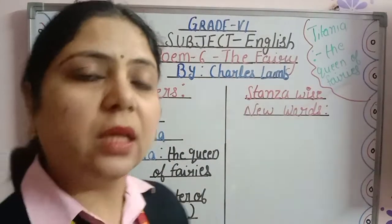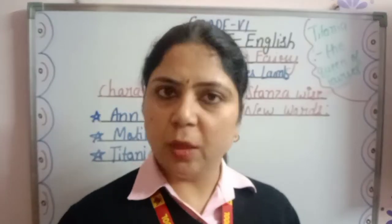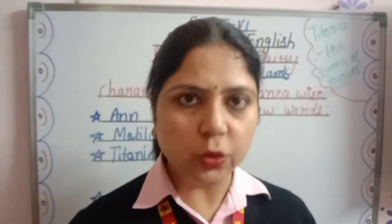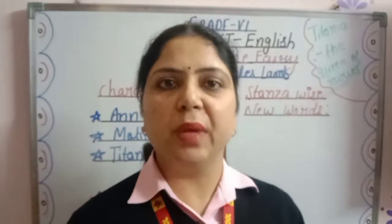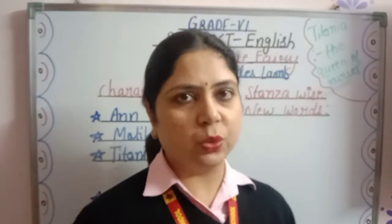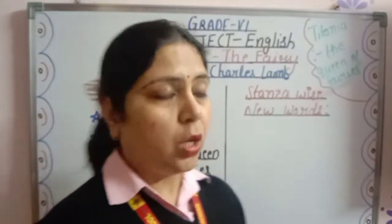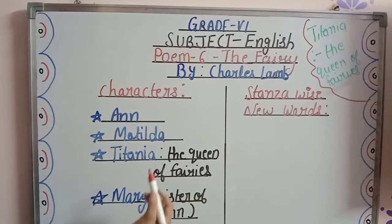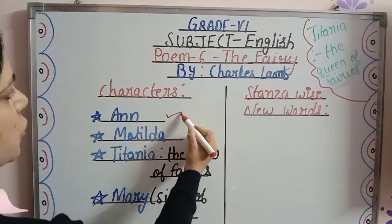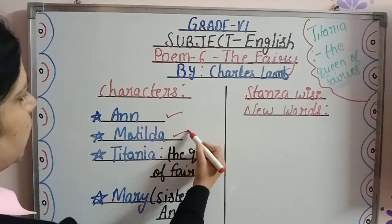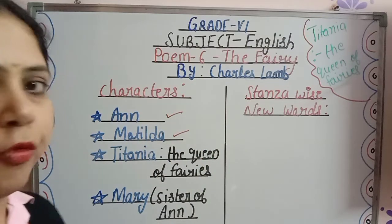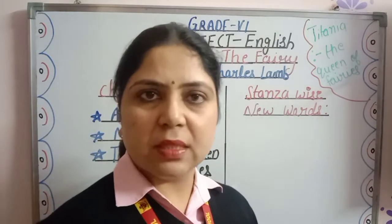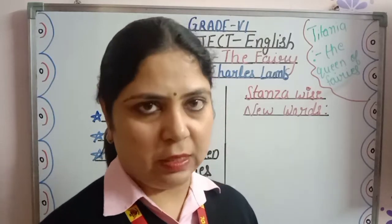In this poem, we are going to study about the description of fairies — how do they look like, and whether whatever we imagine about the presence of fairies is really true or not. This poem is basically the conversation between two girls named Ann and Matilda. They are very good friends and they talk about the presence and the description of the fairies.